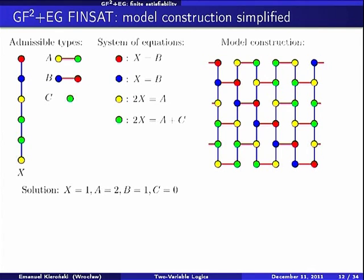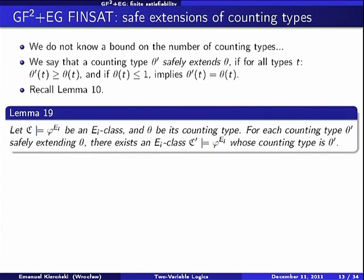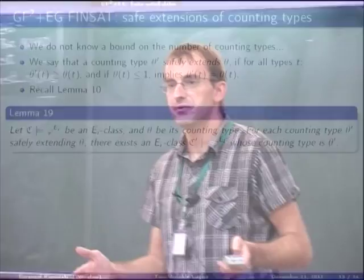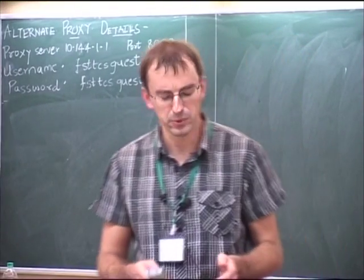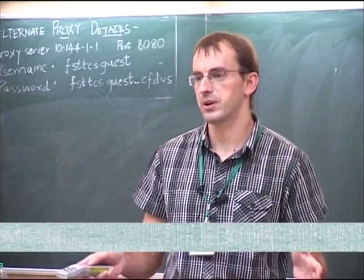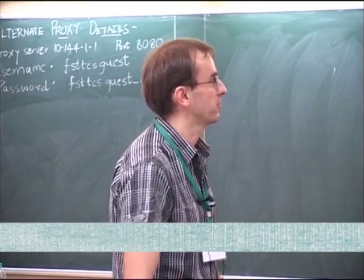This approach can be easily generalized: if we have more than two equivalence relations, we simply construct multi-dimensional grids. The problem is that we do not know a bound on the number of counting types — this may be infinite — so we would have infinitely many variables, which would be a problem.